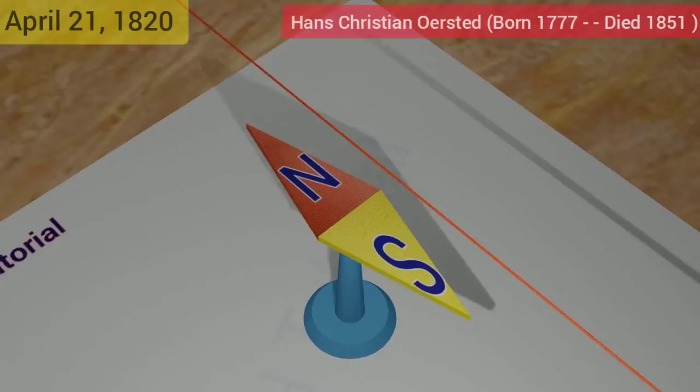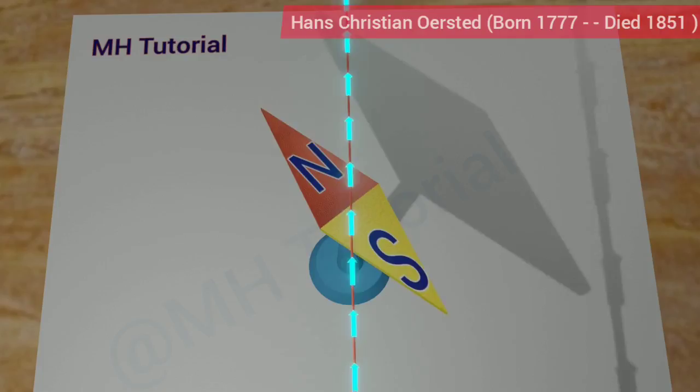On April 21, 1820, Danish physicist Hans Christian Ørsted noticed that a steady current-carrying wire can deflect a nearby magnet.